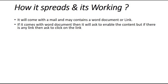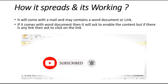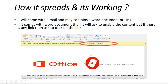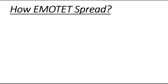How does Emotet spread? It comes via email containing a link or a Word document. If there is a Word document, it will ask you to enable content. Make sure that whenever you get any file in your mailbox with an enable-content request, you analyze that email carefully before enabling anything.